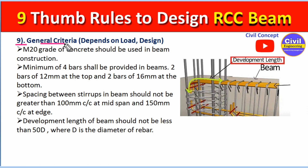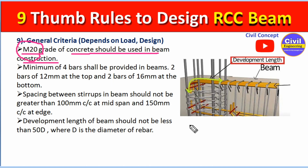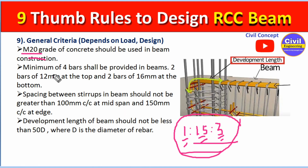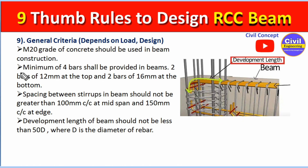Our ninth and last point covers general criteria. First, M20 grade of concrete should be used in beam construction. The mix ratio for M20 is 1:1.5:3 — meaning 1 part cement, 1.5 parts sand, and 3 parts aggregate.